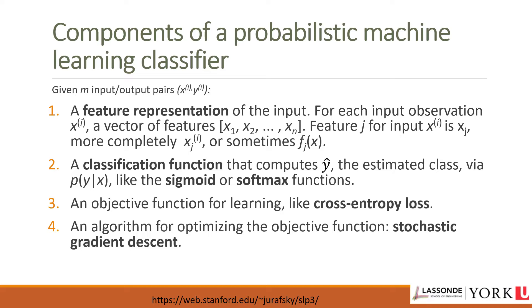The second component is the classification function, which computes the estimated class y-hat using the probability of y given x — either a sigmoid function or a softmax function. The third component is an objective function for learning; we will use cross-entropy loss. The fourth component is an algorithm to optimize the objective function; we will use gradient descent.